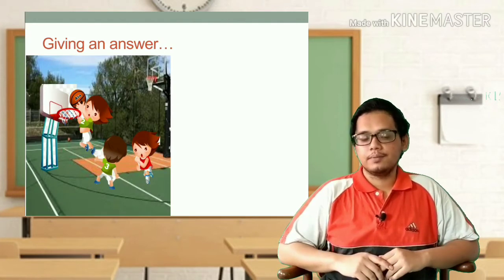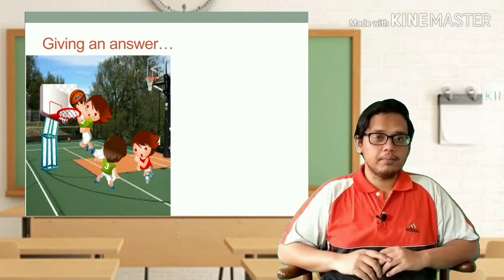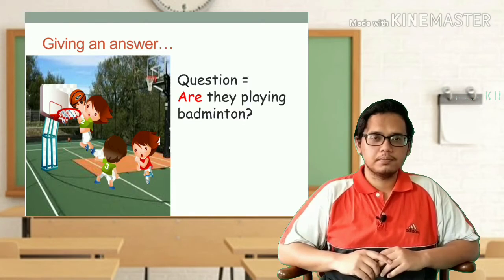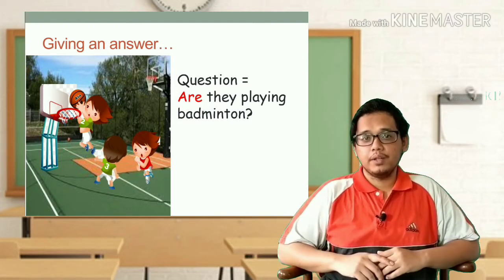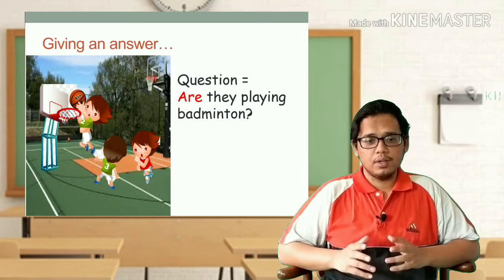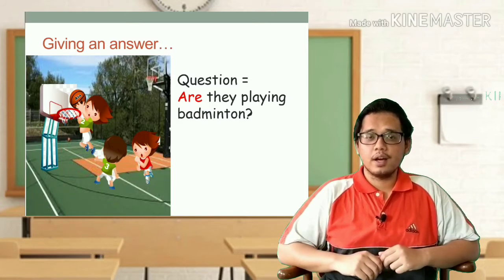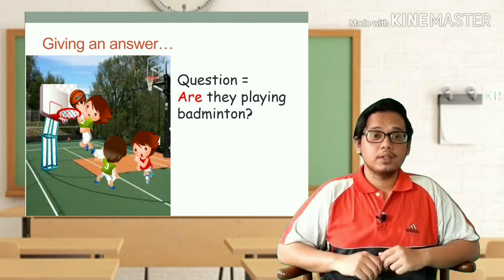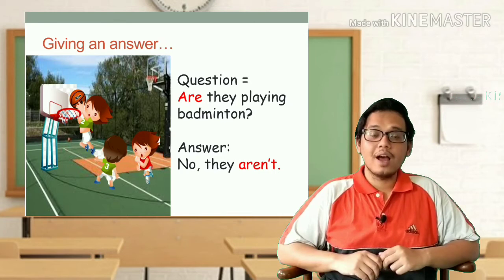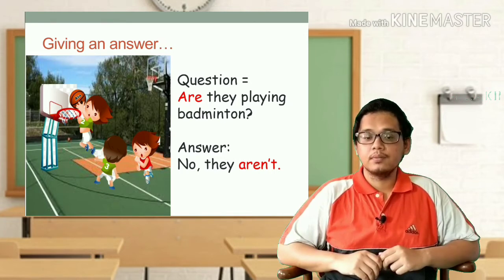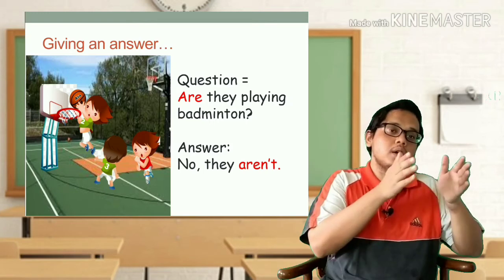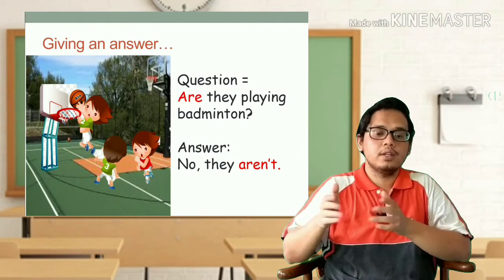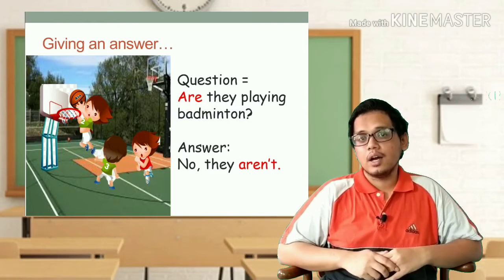Next one — look at the picture. Are they playing badminton? Of course they are not playing badminton; the boy and the girl are playing basketball. So to give the answer we must say: No, they aren't. We put 'no' in front, then the personal pronoun 'they', and then the word 'aren't' — because the answer is no.